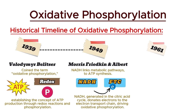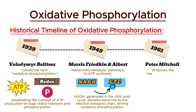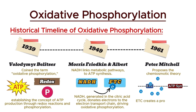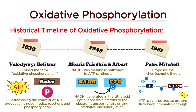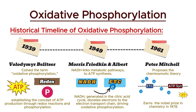Later in 1961, Peter Mitchell proposed the chemiosmotic theory, explaining the mechanism of ATP production during oxidative phosphorylation. He suggested that the electron transport chain creates a proton gradient by pumping protons across the inner mitochondrial membrane. Mitchell explained that ATP is synthesized as protons flow back into the mitochondrial matrix through ATP synthase, driven by the proton motive force. This revolutionary idea earned him the Nobel Prize in Chemistry in 1978.